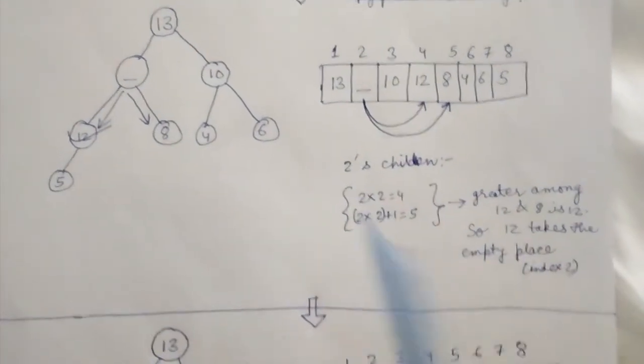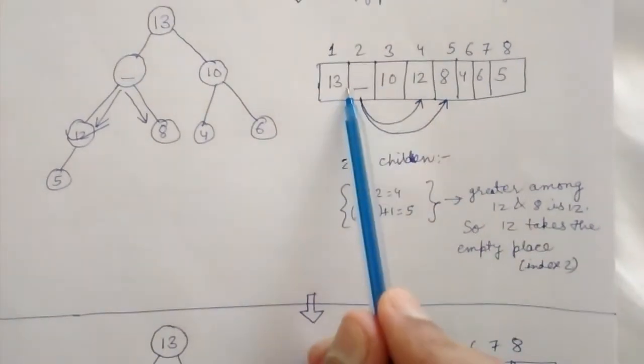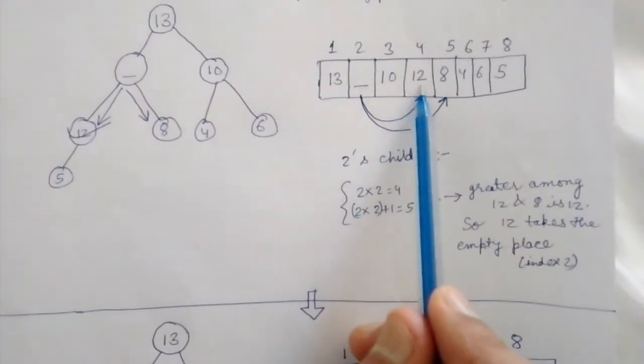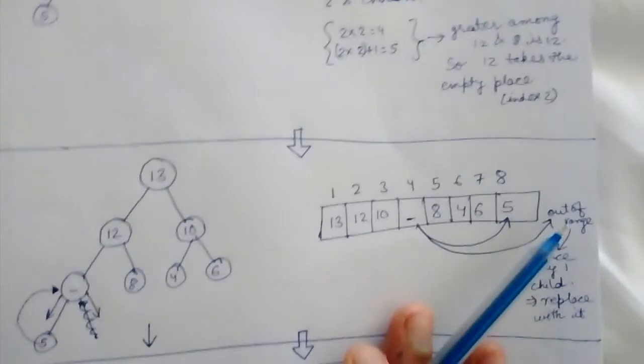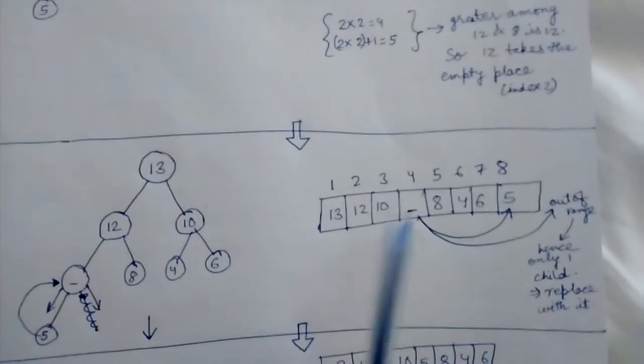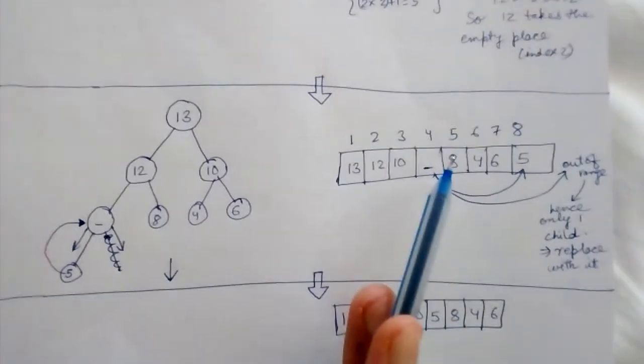12 comes to index 2, so now 12's position becomes empty. The 4th index is empty. Now we see